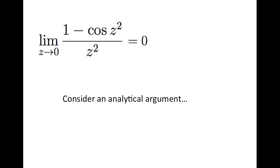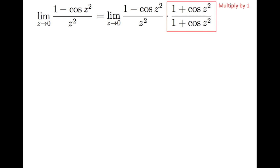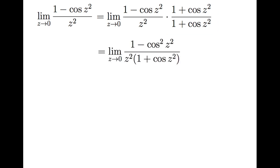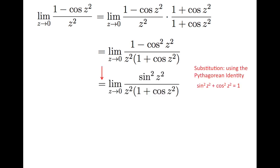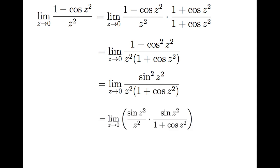Now let's take an analytical approach. Again, I'm going to make use of multiplying by a form of 1. This time, I multiply 1 minus cosine of z squared divided by z squared by 1 plus cosine of z squared divided by 1 plus cosine of z squared. In the numerator, multiplying those two factors gives the difference of squares: 1 minus cosine squared of z squared. Using the Pythagorean identity, sine squared of z squared plus cosine squared of z squared equals 1, so the numerator becomes sine squared of z squared, which I'll break up as sine of z squared times sine of z squared.